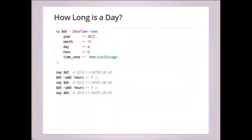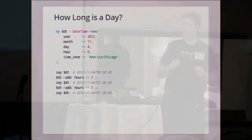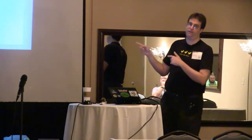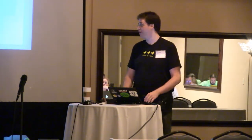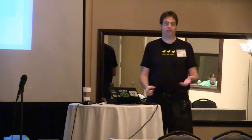Another fun thing: figuring out how long a day is. We make a DateTime for 2012, November 4th, midnight, and add an hour — logically it's 1am. Then we add another hour, and it's still 1am. Why? There's a DST transition where the local time goes back an hour. So that's the second 1am of the night — this day is 25 hours long on the local clock. Of course if you do this all in UTC it's always 24 hours long. You don't have to worry about these problems, but sometimes you need to do math using the local time.